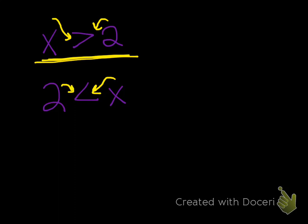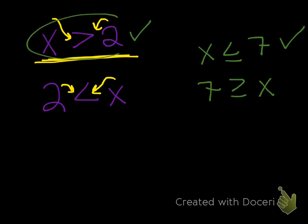So if we had x is less than or equal to 7, you could rewrite that as 7 is greater than or equal to x. Now this way right here and this way right here are going to be the ways that you want to see it. It just makes it easier. So if you ever get an answer that has the variable on the right side, go ahead and flip it so it looks like these right here.